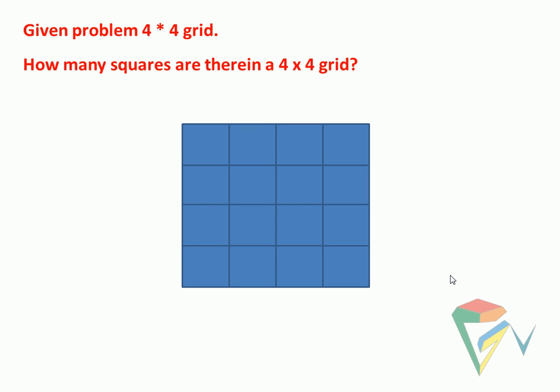Here we have a problem: how to solve the n×n grid. At this point, I am taking 4×4. In this square, how many squares are available?